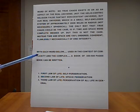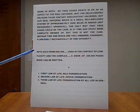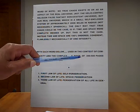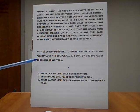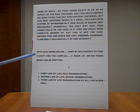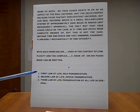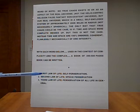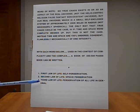Now, with each word coming up, each word coming up, with each word below, used in the context of complexity and the complex, a book of 300 to 500 pages, book, can be written. But before we go to those words, number one, first law of life is self-preservation. The second law of life is specie preservation. The third law of life is preservation of all life itself in general.